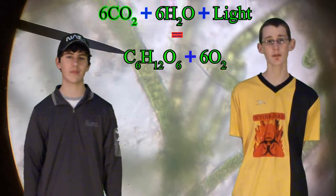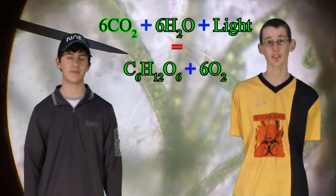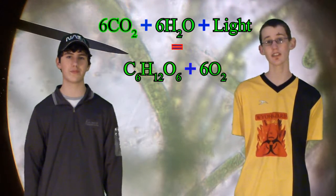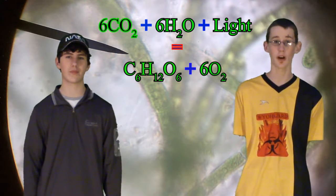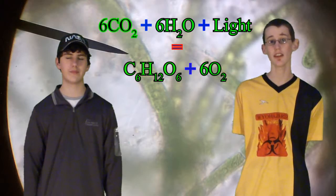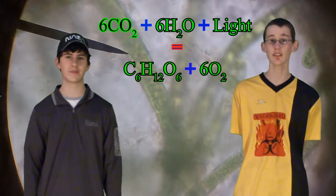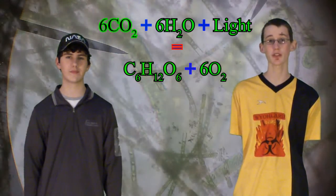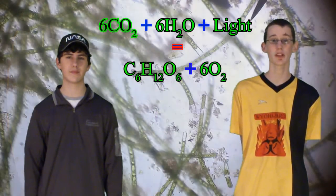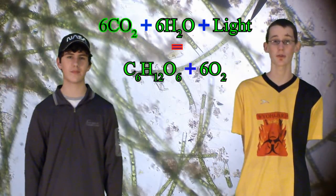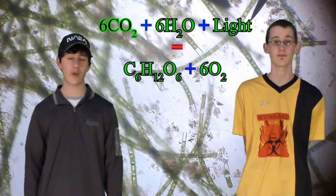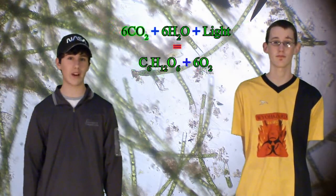The equation for photosynthesis is 6CO2, or carbon dioxide, plus 6H2O, or water, plus light, yields C6H12O6, or glucose, plus 6O2, or oxygen.